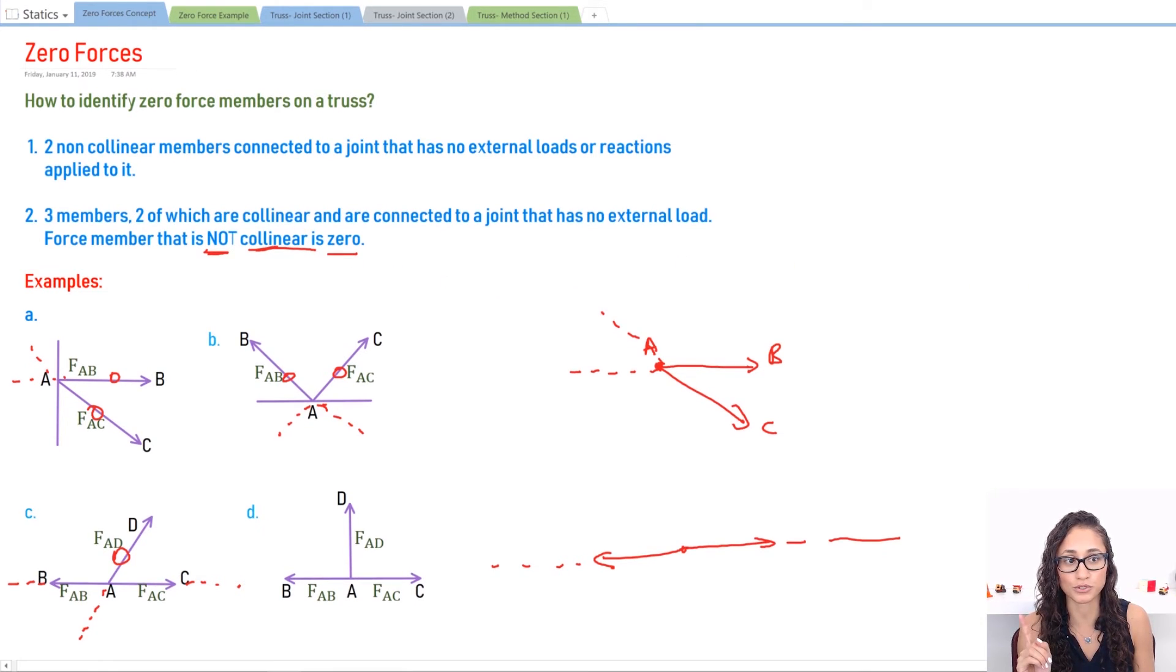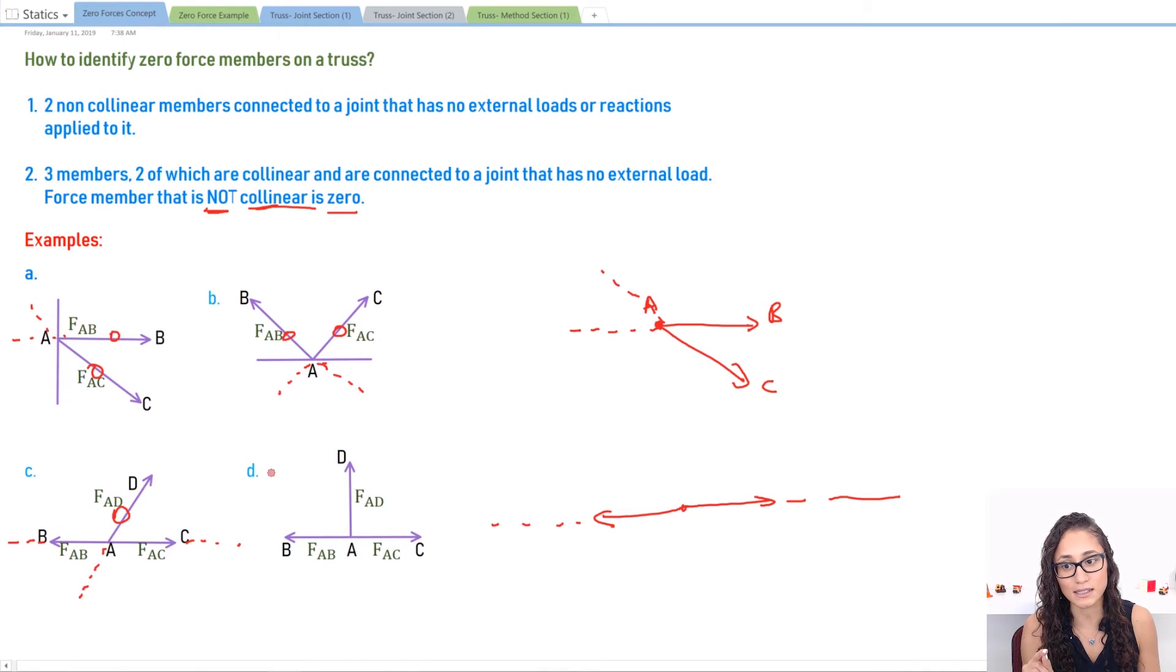Now CD is the same thing. We have these on the same line, AD is not, so AD is going to be zero because that's the non-collinear member.